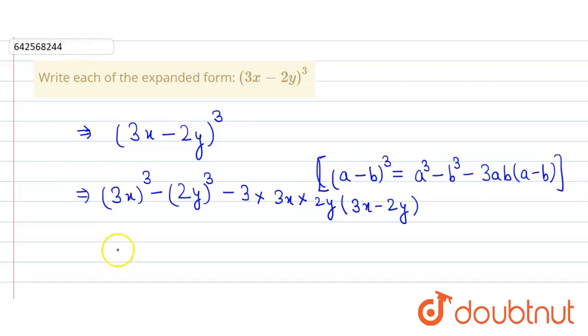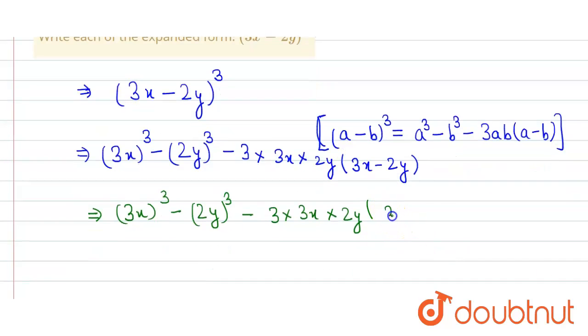So we have (3x)³ - (2y)³ - 3 × 3x × 2y × (3x - 2y).